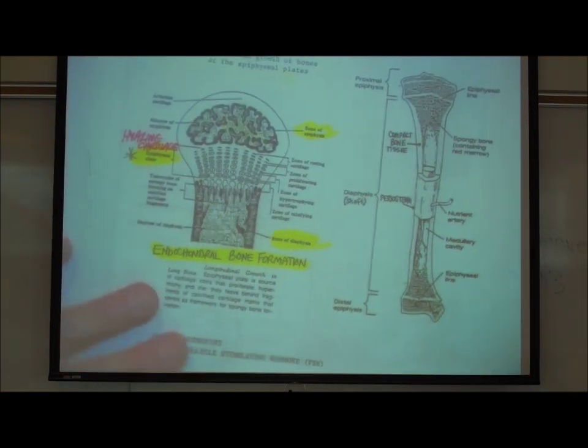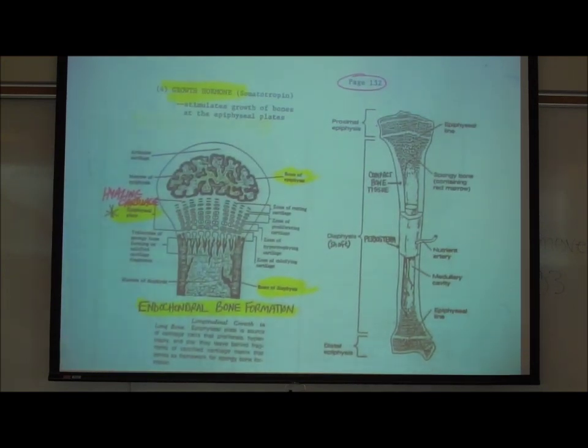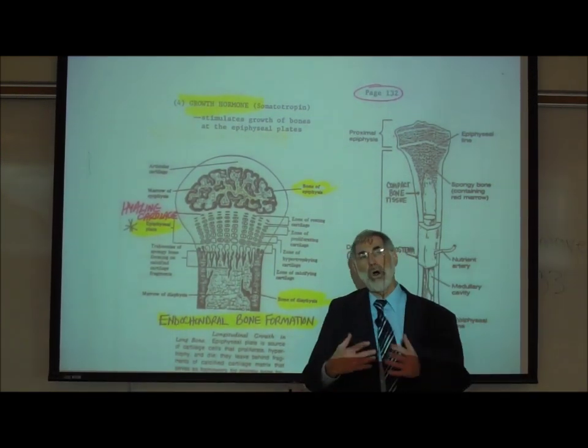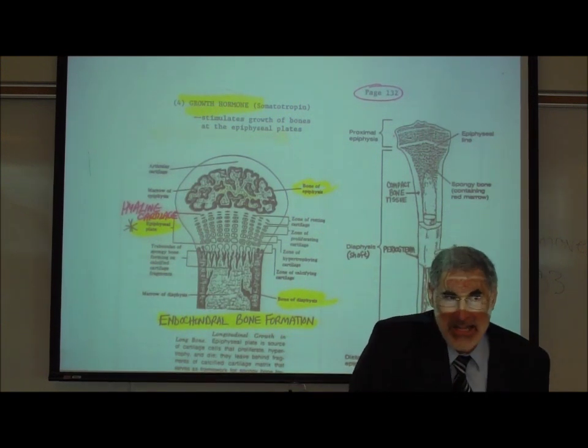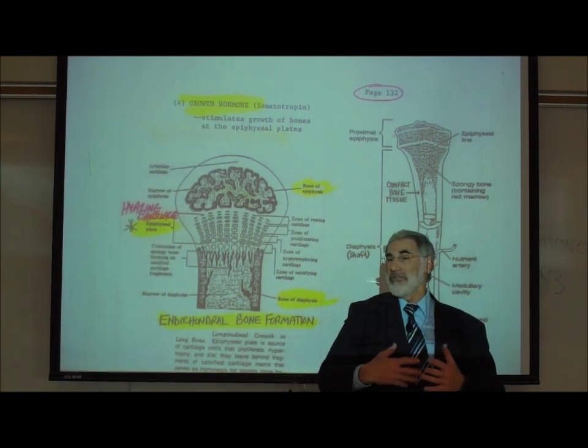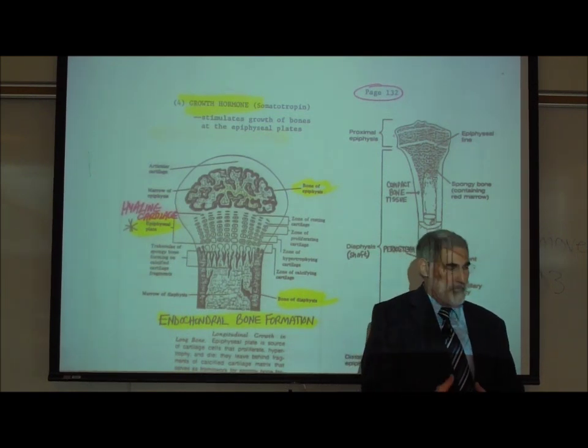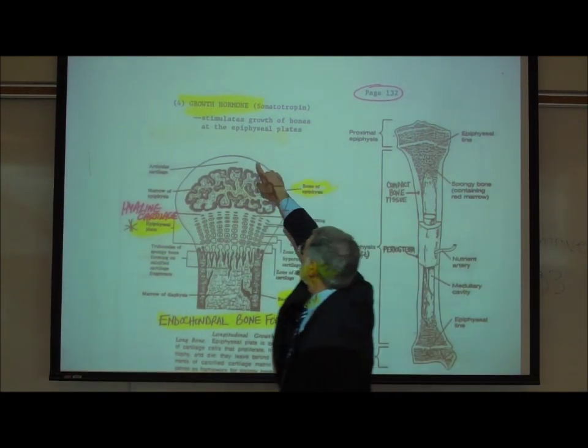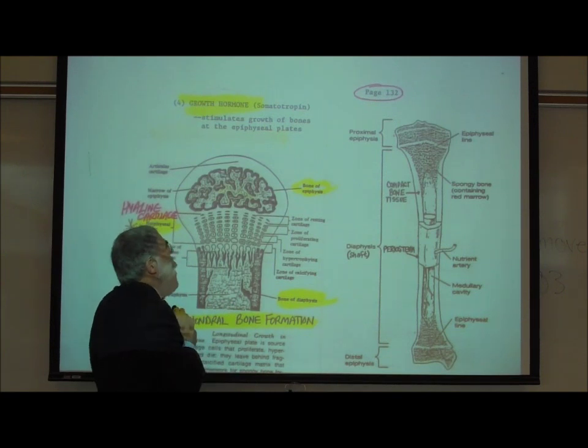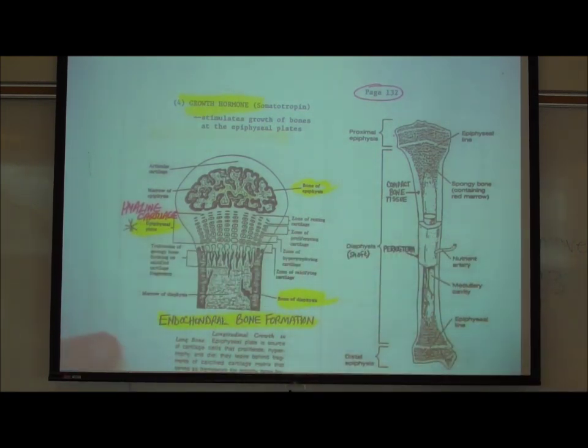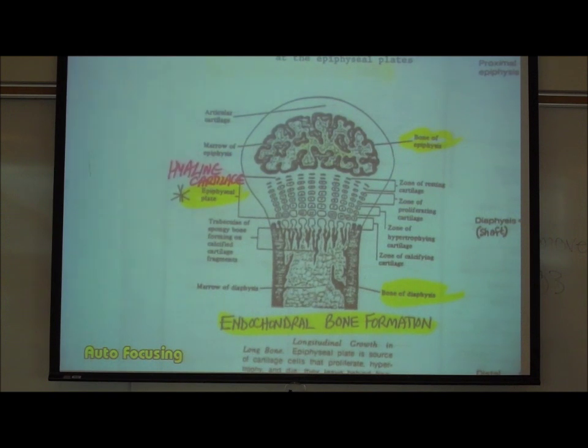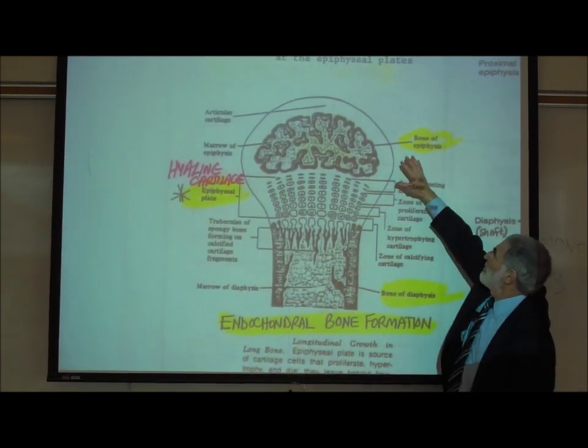On page 132, we'll remind you of something that you learned about in anatomy. You learned all about the structure of a bone. You learned that bones, at least the long bones of our body, those that are in our arms and legs, grow and develop by endochondral bone formation. Endochondral bone formation means they grow from hyaline cartilage. Let's look at this picture right here. Growth hormone stimulates the growth of bones at the epiphyseal plates.